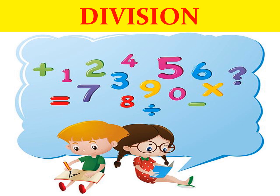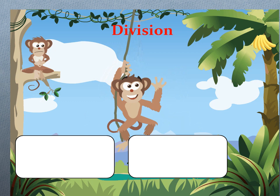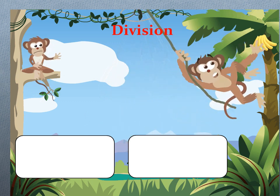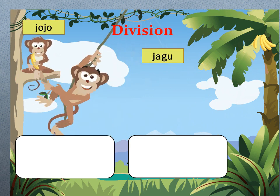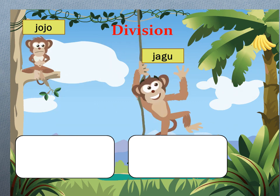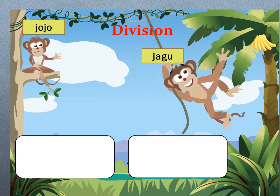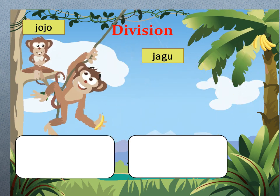This is the sign of division. Dear students, look here — we have six bananas and I want to divide them between two monkeys, Jojo and Jagu. Now find how many bananas each one gets. Remember, when you are distributing the bananas, each monkey must get an equal number.